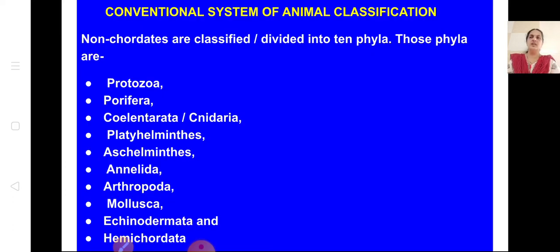In the conventional system of animal classification, non-chordates are classified into 10 phyla: Protozoa, Porifera, Cnidaria, Platyhelminthes, Aschelminthes, Annelida, Arthropoda, Mollusca, Echinodermata, and Hemichordata. You should learn these 10 phyla by heart.